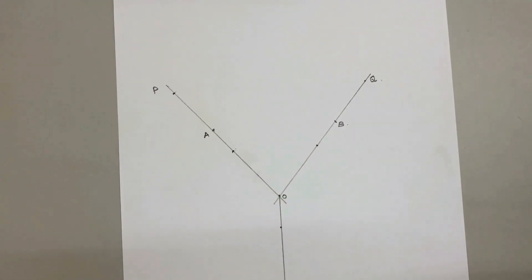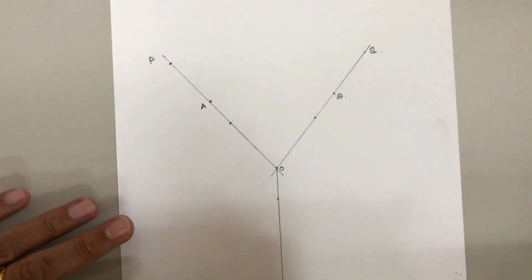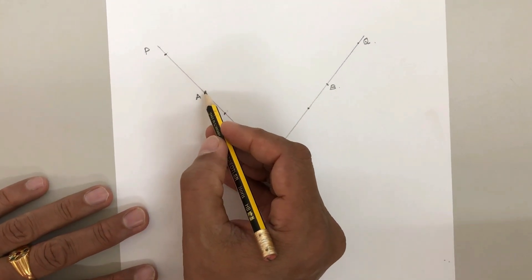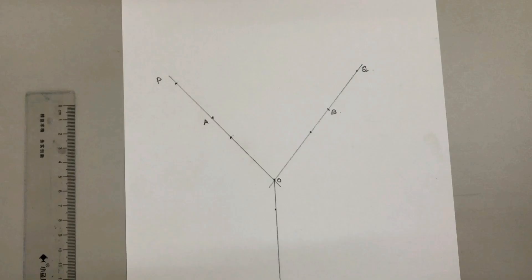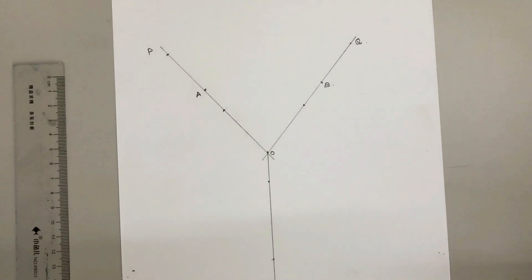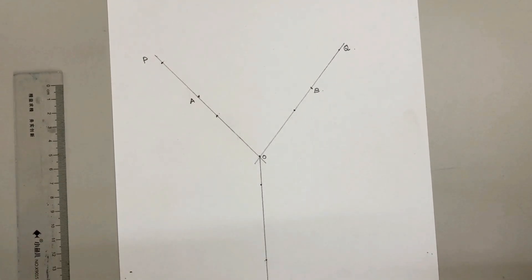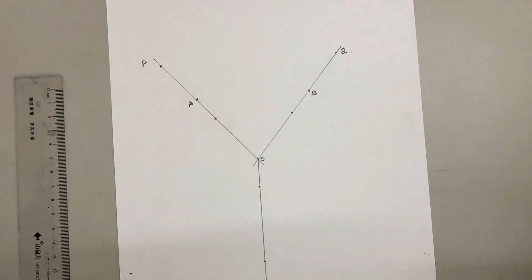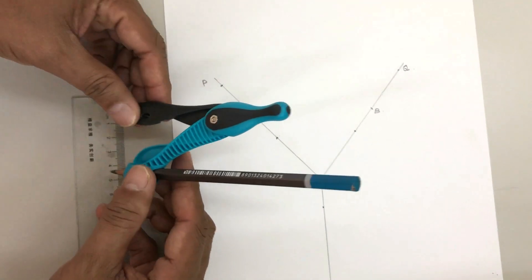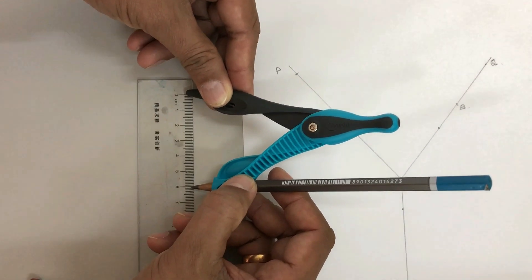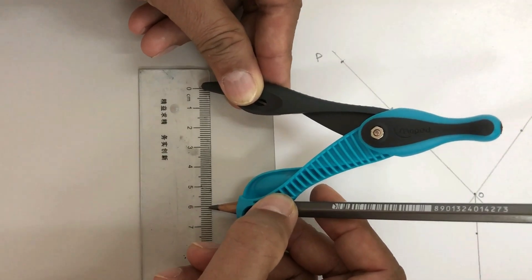Now we have to draw an arc from point B and A and mark it as C. For drawing an arc from point B and point A, we have to measure 6 centimeters on a compass using a scale. So here we have got 6 centimeters measured on the scale.